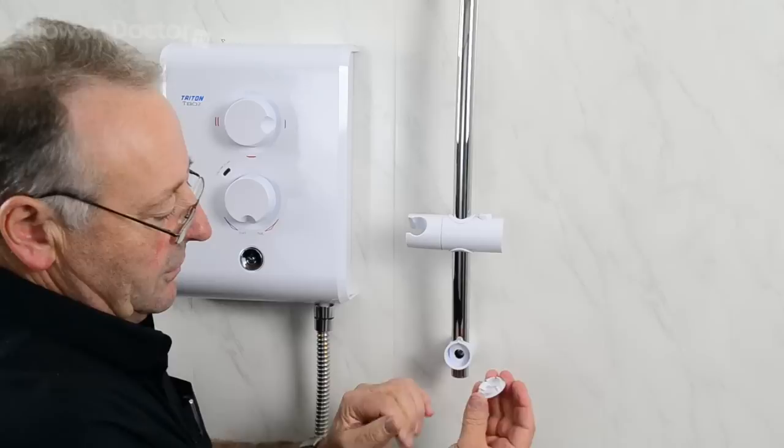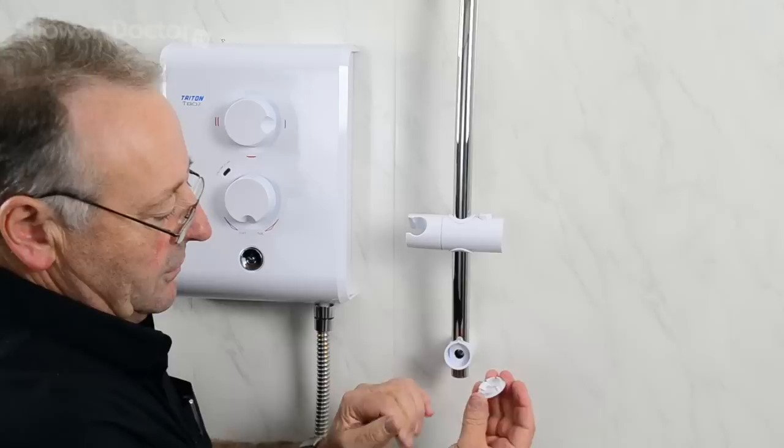Refit the cap. There's often a lug on the cap to make sure you have it pushed in the correct place. Shower head back on, bracket up. That's it, shower bracket fitted.